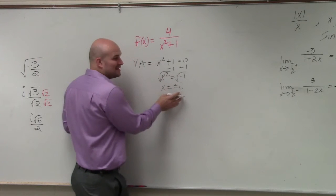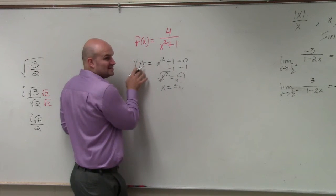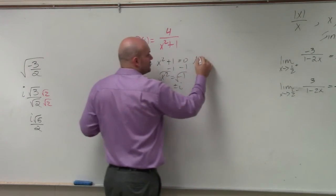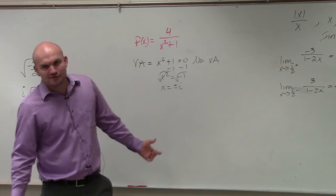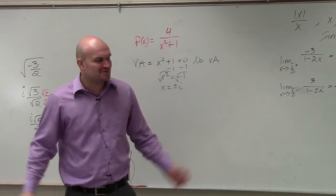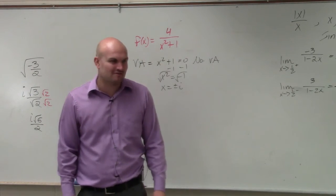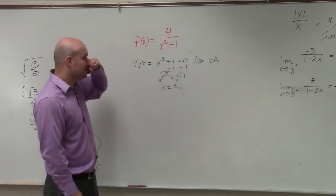Since it's only imaginary numbers that make this undefined, there are no real vertical asymptotes. There are imaginary vertical asymptotes, but do we really care about imaginary vertical asymptotes? No. So there's going to be none.